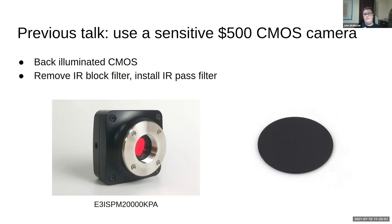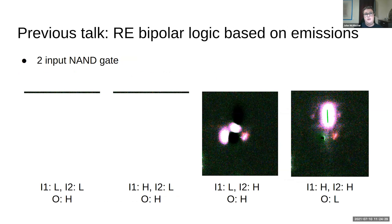Most cameras filter out that light intentionally because mostly you want to see what your eyeballs can see. So I removed the original IR block filter and instead installed an IR pass filter — that black filter that looks opaque to you, but can see in the 1100 nanometer range. That allows me to filter out things like window light and fluorescent lights, narrowing down to just the signals from the chip, which is really important because not a lot of light comes off the chip.